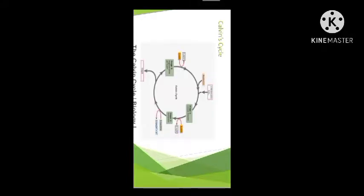The last step in the Calvin cycle is regeneration. What is regenerated? RuBP is regenerated. For the cycle to take place uninterruptedly, RuBP must be regenerated, because RuBP is the molecule that fixes carbon dioxide. Once RuBP fixes one molecule of carbon dioxide, it must be regenerated so it is available to fix another molecule of CO2. For the synthesis of RuBP, one ATP is also required.